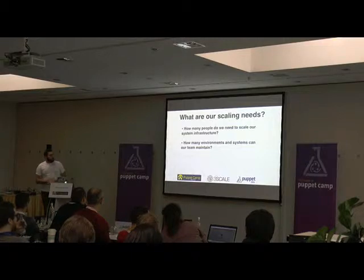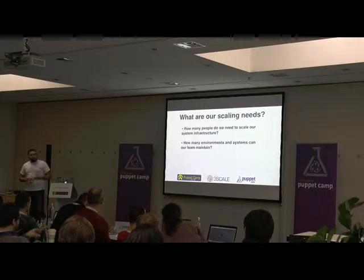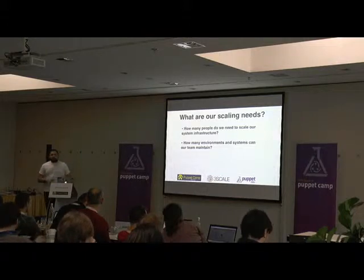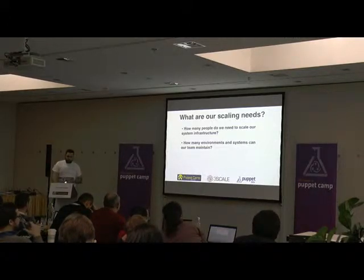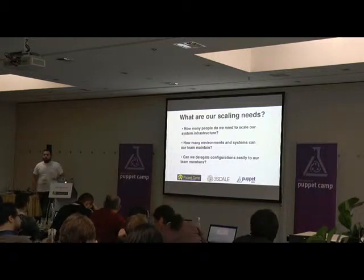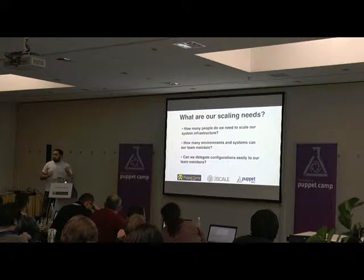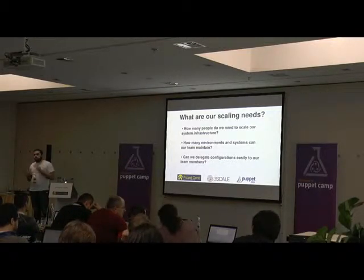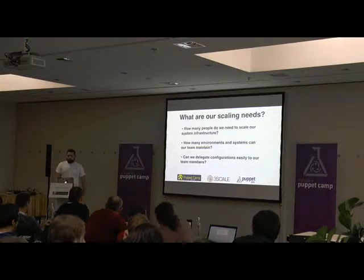We also want to know how many environments and systems we can maintain with our team. At the operations team, we are two people right now, basically in charge of developing Puppet models and developing config management. We can make it easy for other parts of the company to modify the production environments using Hiera and PuppetDB and other tools without being scared at night when somebody does it. This comes to the third question: can we delegate configurations to other parts of the teams? I don't want a developer modifying a Puppet model at night — scared that he's modifying some manifest or some class or some resource. The easy way to do that is using Hiera and PuppetDB so they can change parameters and easily apply to production without changing the logic behind our architecture.